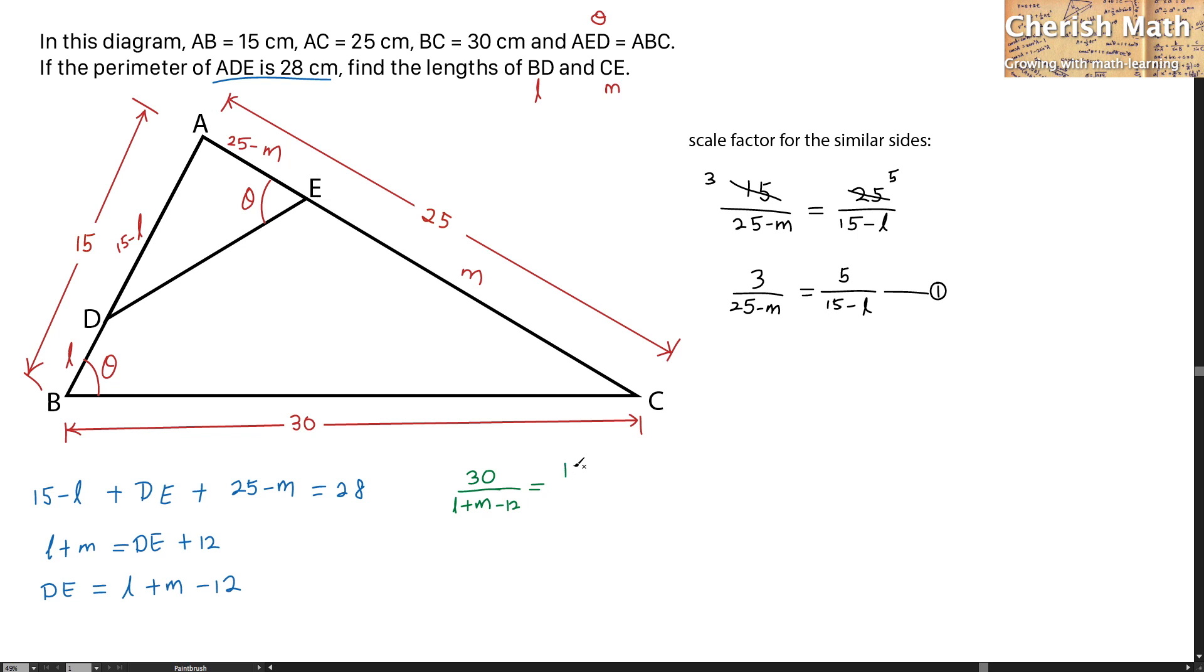I'm going to put this over here. Let's simplify the equation. I get 2 and 2 divided by L plus M minus 12 equals 1 over 25 minus M. I'm further simplifying the equation. That is 50 minus 2M equals L plus M minus 12. Making L the subject here, that would be 62 minus 3M. I name this as our second equation.